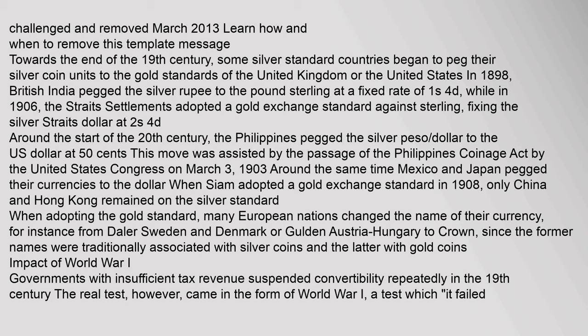Towards the end of the 19th century, some silver standard countries began to peg their silver coin units to the gold standards of the United Kingdom or the United States. In 1898, British India pegged the silver rupee to pound sterling at a fixed rate of 1s 4d. In 1906, the Straits Settlements adopted a gold exchange standard against sterling, fixing the silver straits dollar at 2s 4d. Around the start of the 20th century, the Philippines pegged the silver peso to the U.S. dollar at 50 cents, assisted by the Philippines Coinage Act of March 3, 1903. Mexico and Japan also pegged their currencies to the dollar. When Siam adopted a gold exchange standard in 1908, only China and Hong Kong remained on the silver standard.